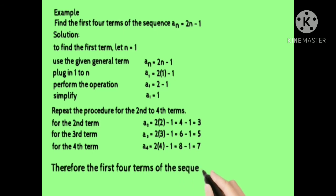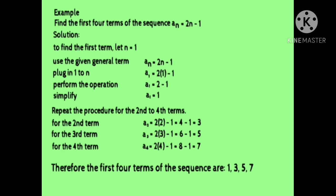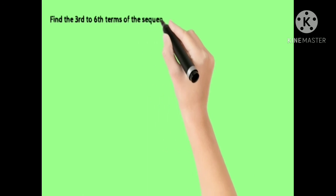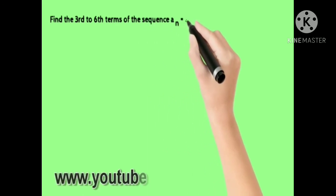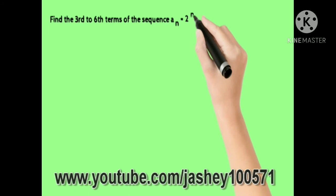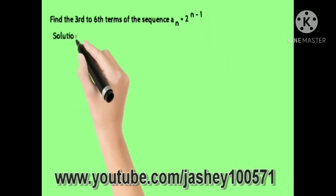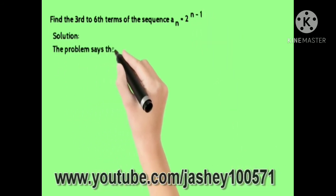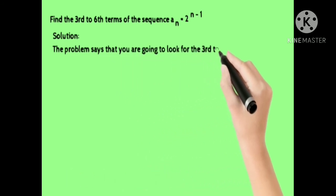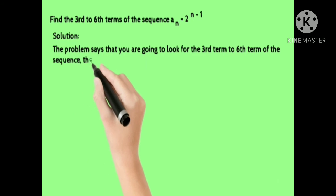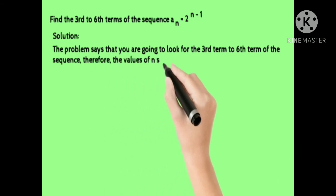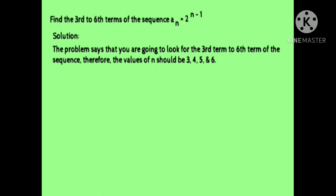Therefore, the first four terms of the given sequence are 1, 3, 5, 7. Next example: find the third to sixth terms of the sequence where a sub n is equal to 2 raised to n minus 1. The problem asks you to look for the third through sixth terms, so the values of n should be 3, 4, 5, and 6.